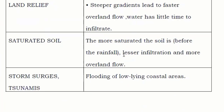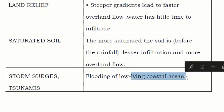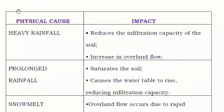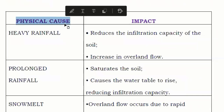Another physical cause is storm surges or tsunamis. When a tsunami or storm such as a cyclone occurs, especially near coastal areas, water comes in from the sea and causes flooding. All of these are physical causes — things that happen naturally.